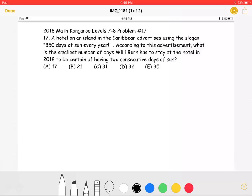According to this advertisement, what is the smallest number of days Willie Byrne has to stay at the hotel in 2018 to be certain of having two consecutive days of sun? A. 17, B. 21, C. 31, D. 32, or E. 35.